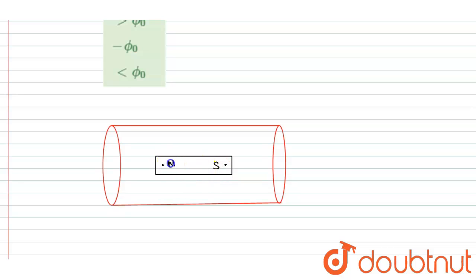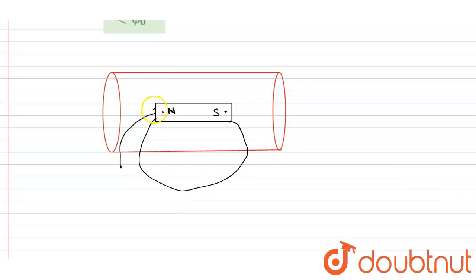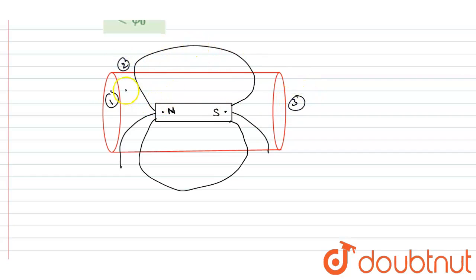So this is the north pole and this is the south pole. The field lines that originate from this north pole will terminate at the south pole. There will be flux through the circular region — surface 1, surface 2 (the curved path), and surface 3. The flux entering through the north pole will terminate at the south pole.